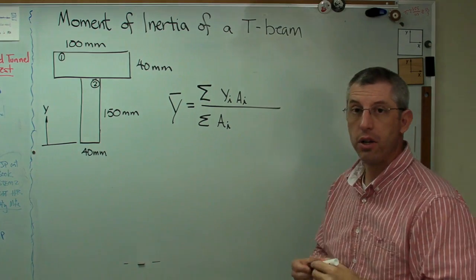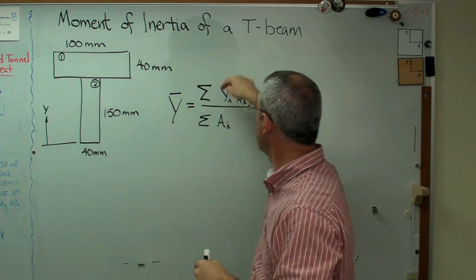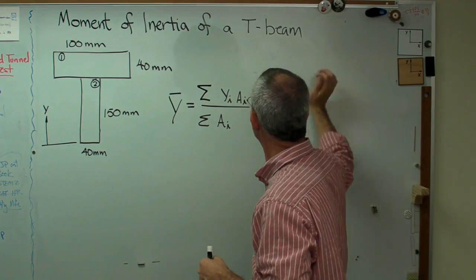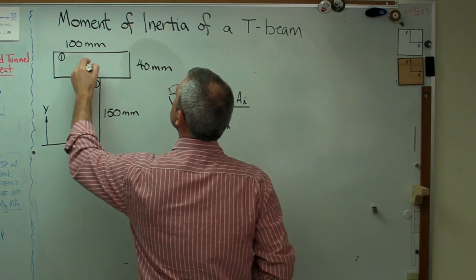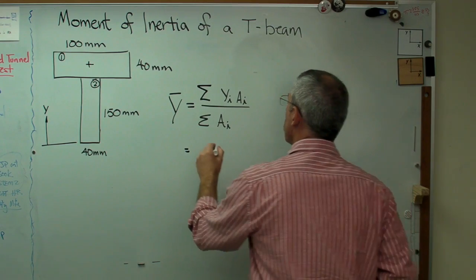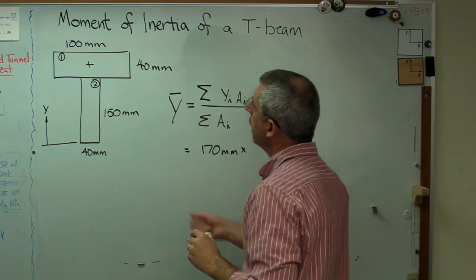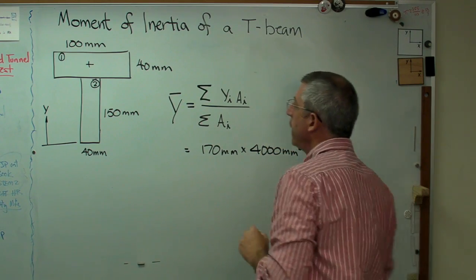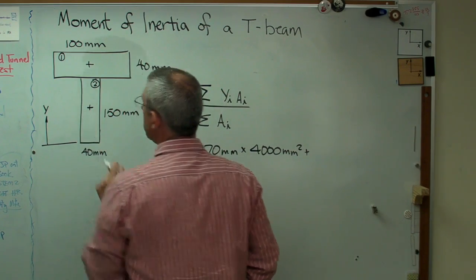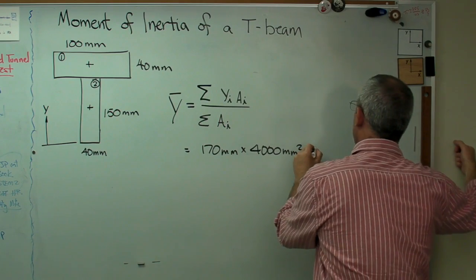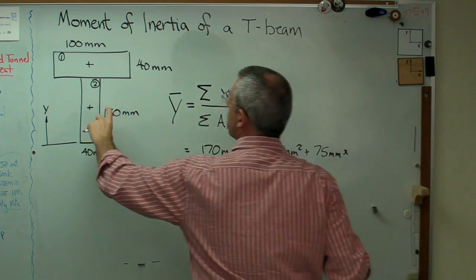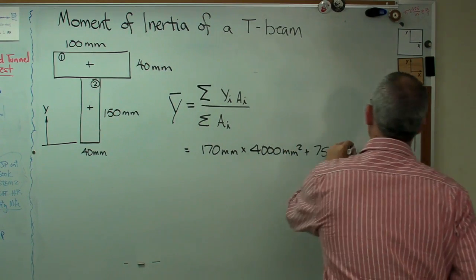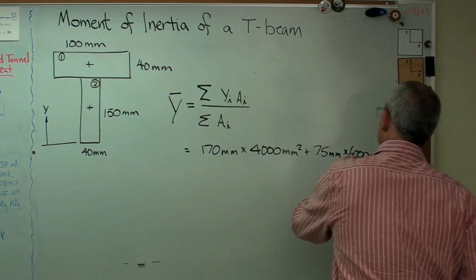So what we've got is in the numerator, we've got the sum of the centroid of the individual boxes times the area of each individual box. So the centroid of the first box is that distance plus one half that width there. So it's going to be 170 millimeters times the area. Well, the area is 100 millimeters times 40 millimeters. It's going to be 4,000 millimeters squared, plus now the centroid of box number two here, and that's going to be 75 millimeters. It's just half that, times the area. Well, the area is 150 times 40. That's going to be 6,000.